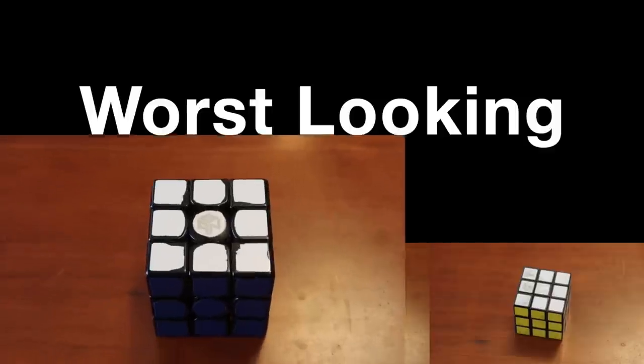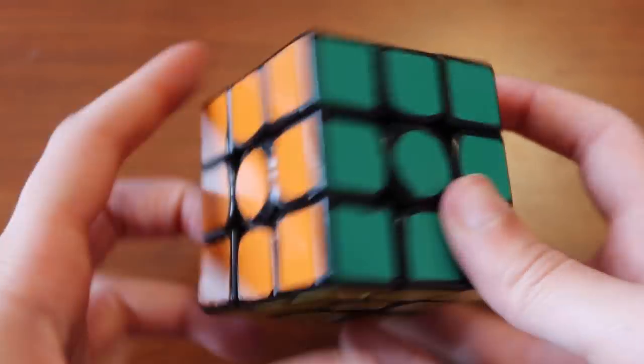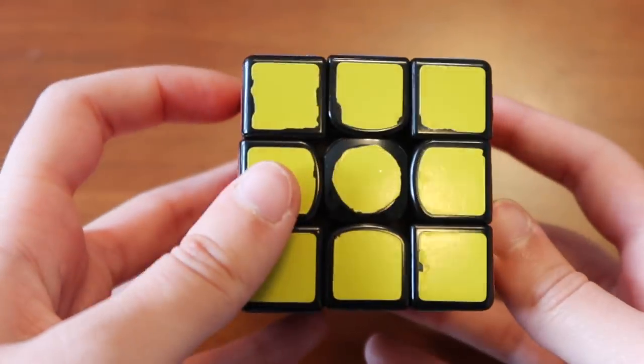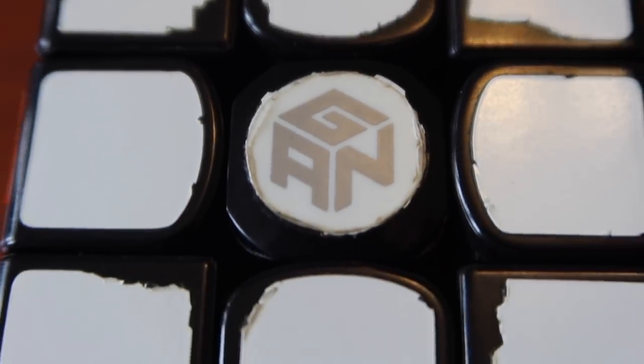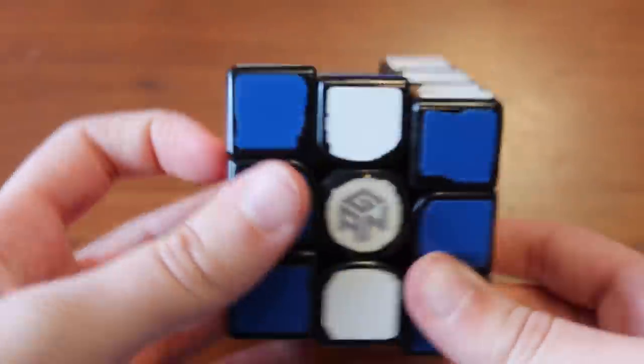Our next category is for worst looking cube. The nominees in this category are the GAN 356S. This cube has definitely seen better days. Pretty much all the stickers are chipped or peeling. This is a great cube. It turns well but the stickers are not looking too good.